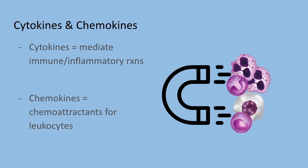Next are cytokines and chemokines. Cytokines are proteins produced by many cell types — mainly activated lymphocytes, macrophages, and dendritic cells, but also endothelial, epithelial, and connective tissue cells — that mediate and regulate immune and inflammatory reactions. Chemokines are proteins that act as chemoattractants for specific types of leukocytes. Inflammatory chemokines stimulate leukocyte attachment to the endothelium by increasing the affinity of integrins, and stimulate migration or chemotaxis of leukocytes in tissues to the site of infection or tissue damage. It is quite difficult to produce antagonists that block these proteins, so they are not often targeted in anti-inflammatory medications.